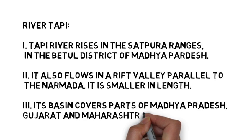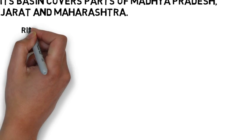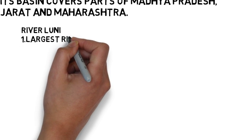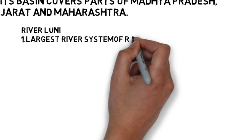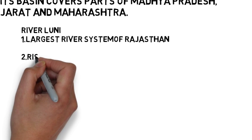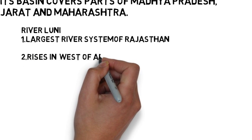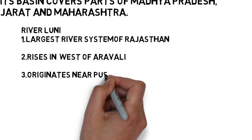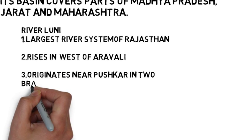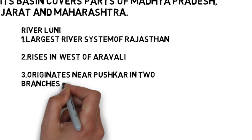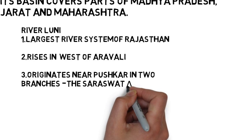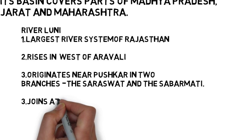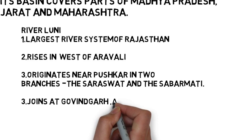Another important river is the Luni, which is the largest river system of Rajasthan west of the Aravali. It originates near Pushkar in two branches — the Saraswati and the Sabarmati — which join each other at Govindgarh. From here the river comes out of the Aravali and is known as Luni. It flows westward till Tilwada and then takes a southwest direction to join the Rann of Kutch. The entire river system is ephemeral.